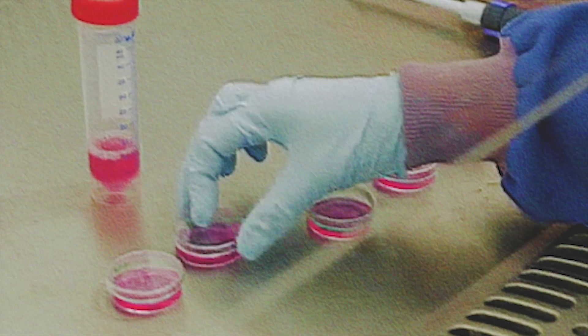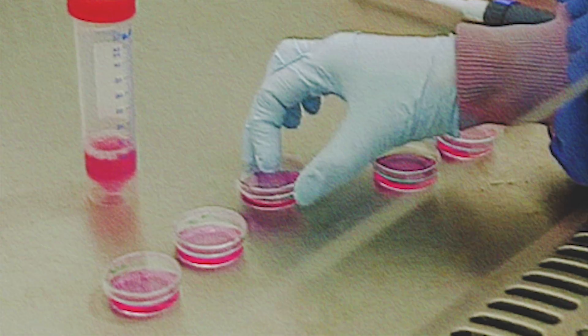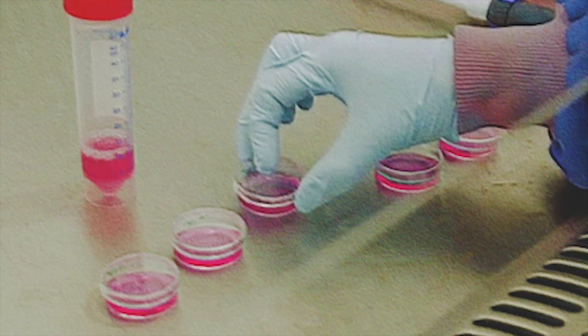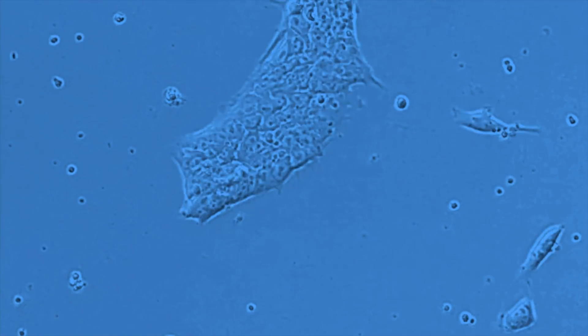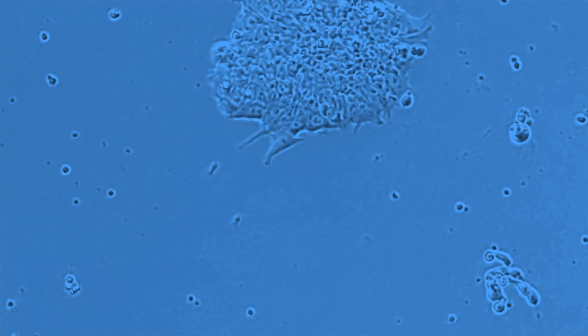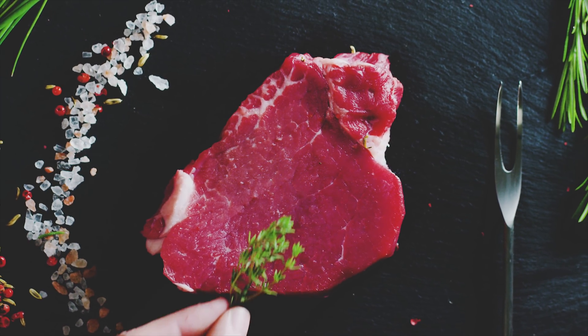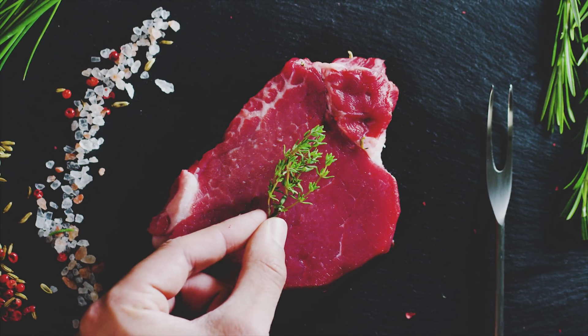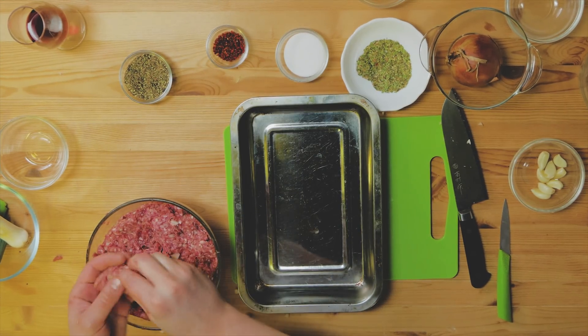Even when the cells can effectively be supplied with nutrients and oxygen, the growth medium is perfected and cell lines are optimized for muscle cell production, the end product is not going to be anything close to a steak. It's going to be a mass of cells, resembling minced meat.